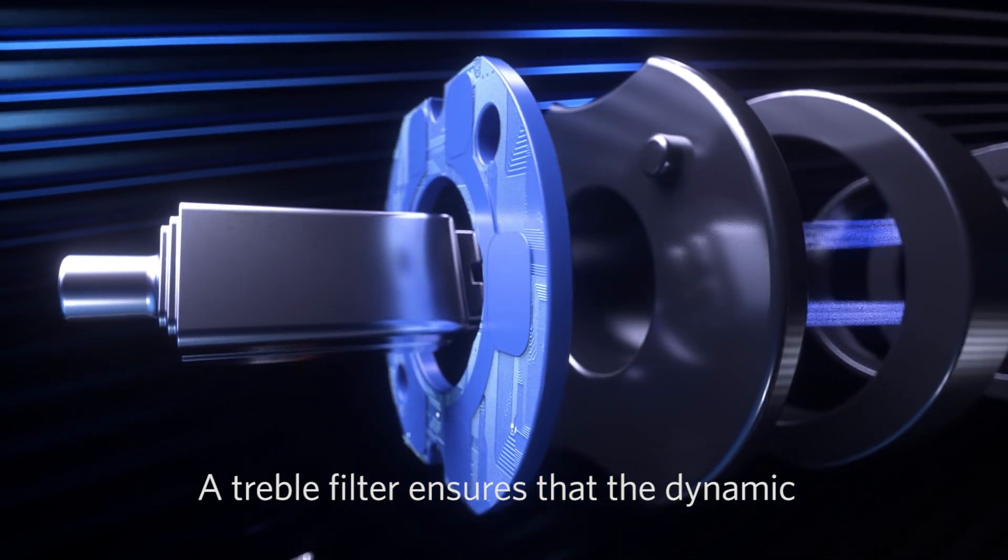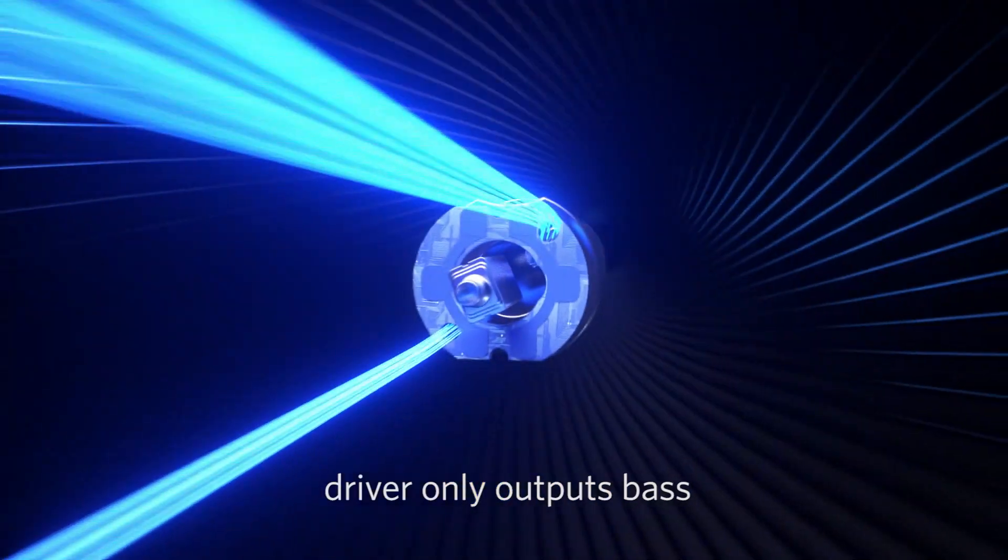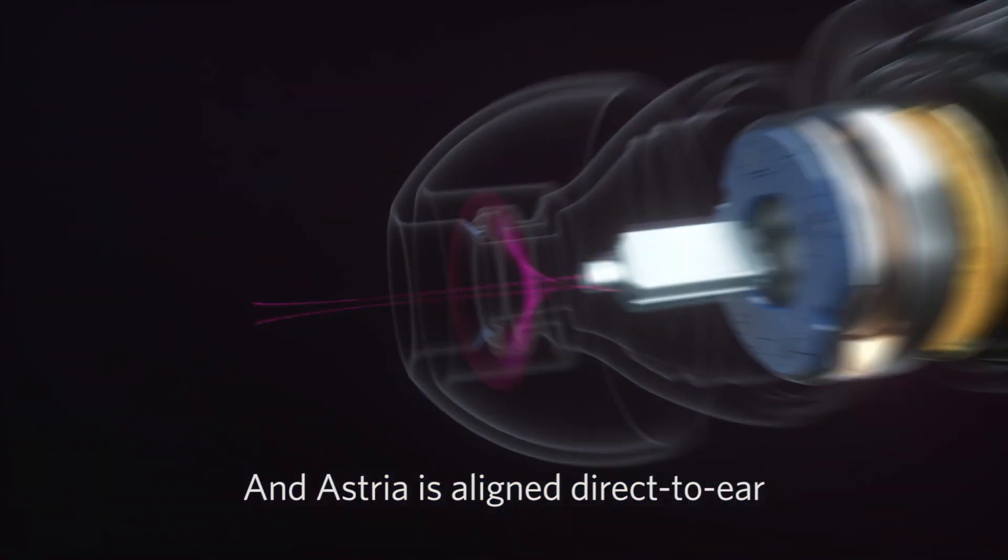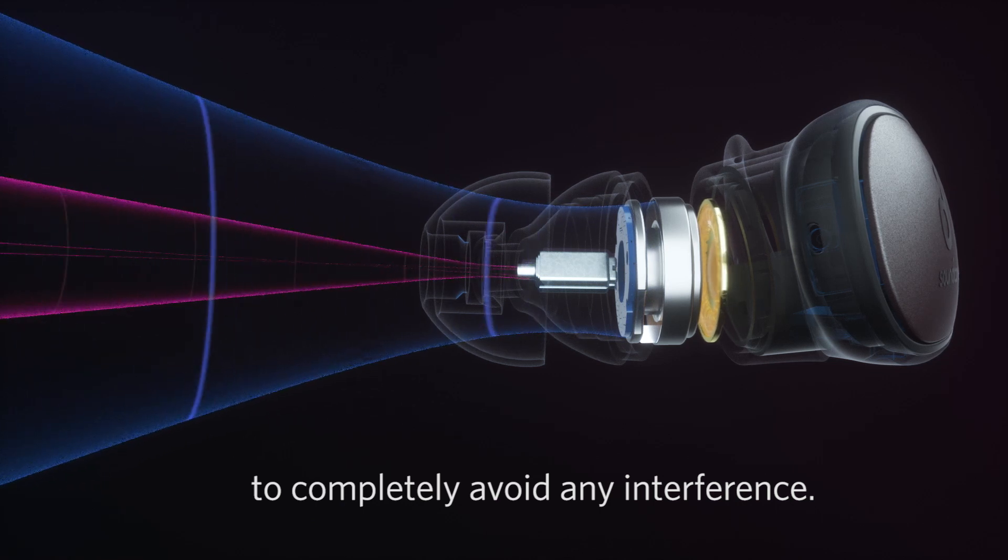A treble filter ensures that the dynamic driver only outputs bass, so it doesn't interfere with the balanced armature. And Astria is aligned direct to ear to completely avoid any interference.